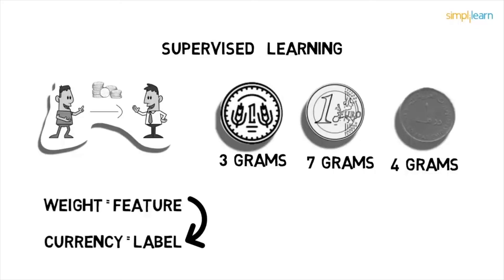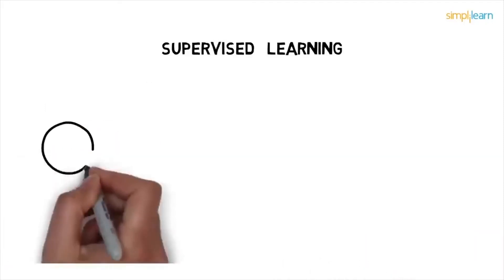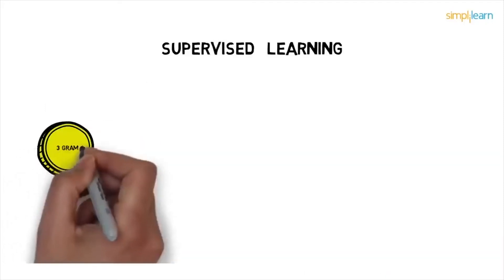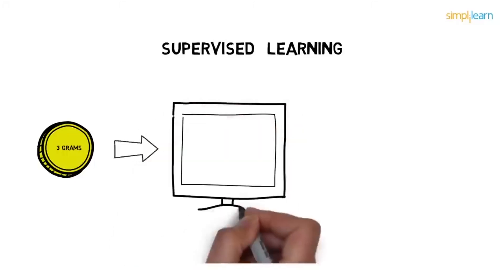For example, it will learn that if a coin is three grams, it will be a one rupee coin. Let's give a new coin to the machine. On the basis of the weight of the new coin, your model will predict the currency. Hence, supervised learning uses labeled data to train the model. Here, the machine knew the features of the object and also the labels associated with those features.